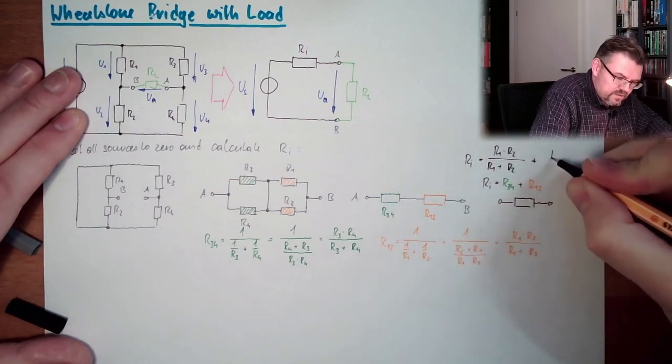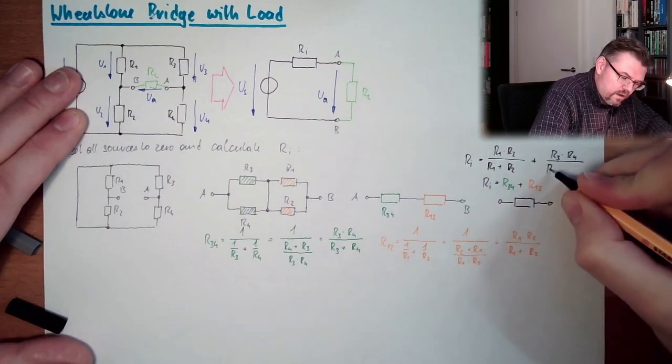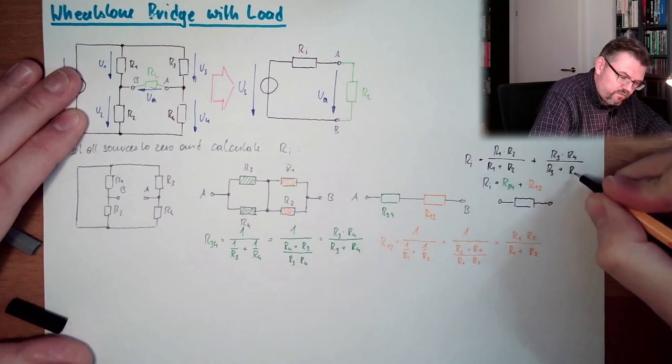Plus R3 multiplied by R4 divided by R3 plus R4.